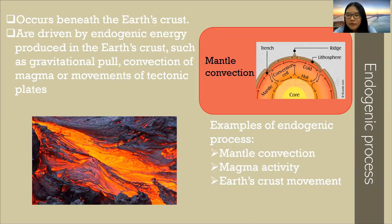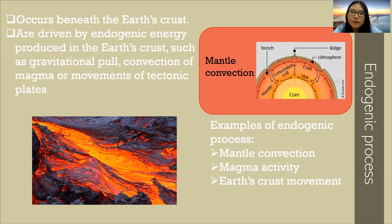Mantle convection happens when hot magma continually rises up and is replaced by cooler and denser magma. This creates convection currents that possess endogenic energy. Next we have magma activity. This happens when hot magma expands and cooler magma contracts. The expansion and contraction of magma produces strong endogenic energy inside the Earth's crust.